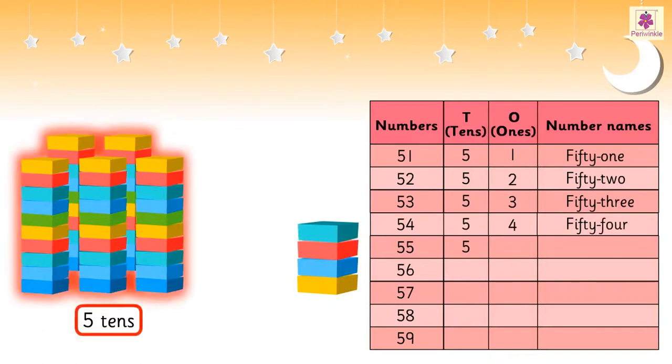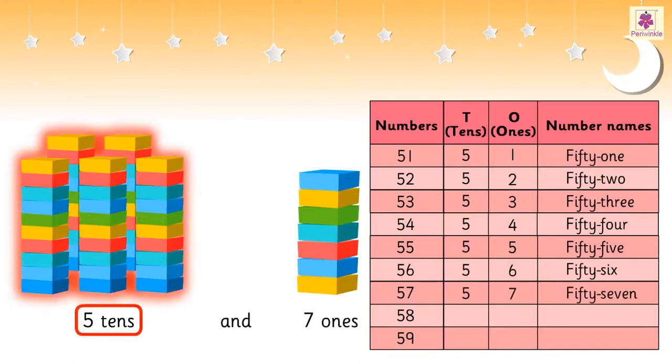5 tens and 5 ones is 55. 5 tens and 6 ones is 56. 5 tens and 7 ones is 57. 5 tens and 8 ones is 58. 5 tens and 9 ones is 59.